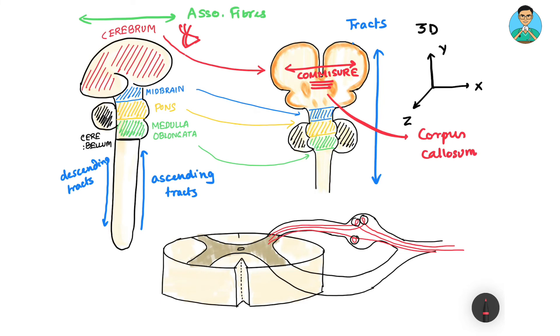White matter is nothing but the collection of axons of neurons present in the central nervous system. The bundles of axons, based on their arrangement and the nature of connecting different gray matter parts, are called either tracts if arranged superior-inferiorly, commissures if connecting left with right, or association fibers if connecting in an anterior-posterior manner.